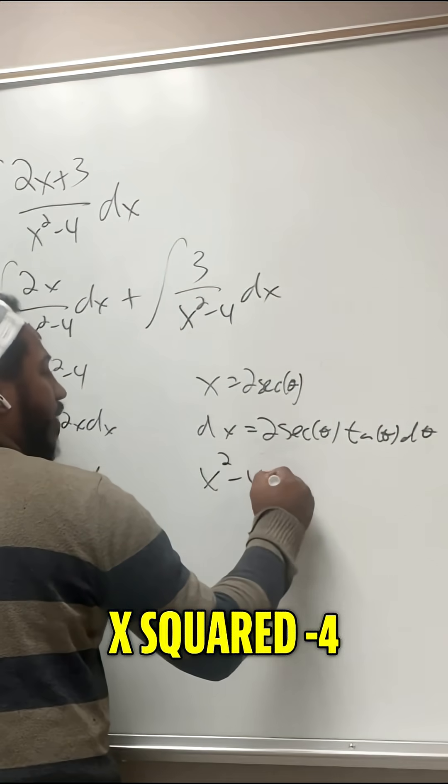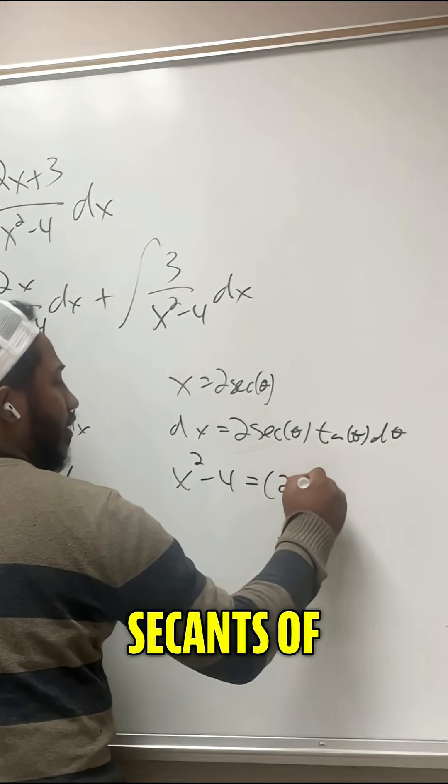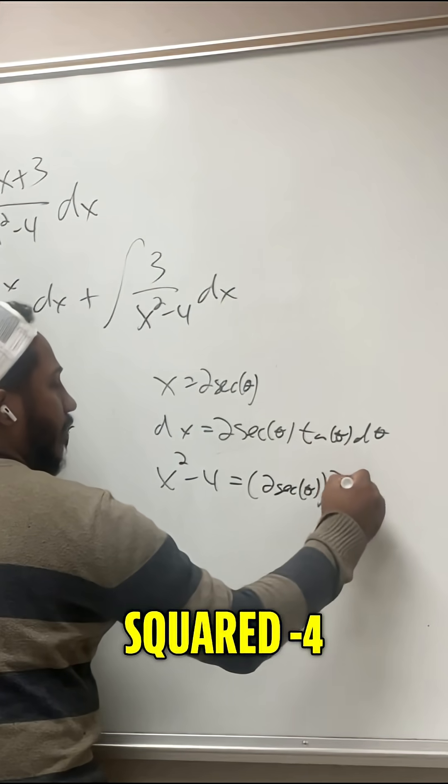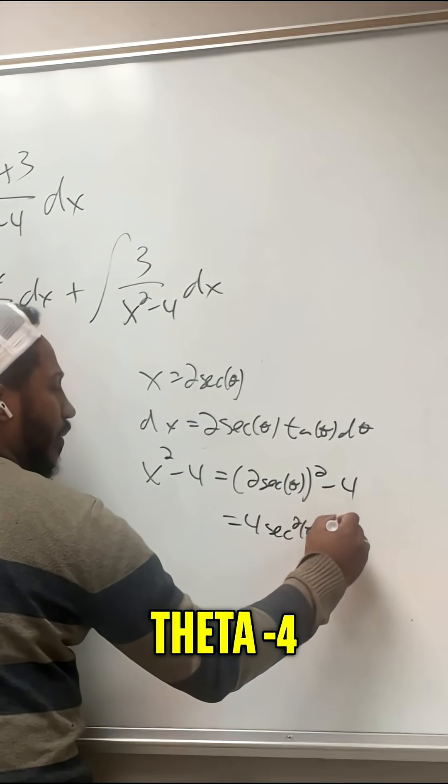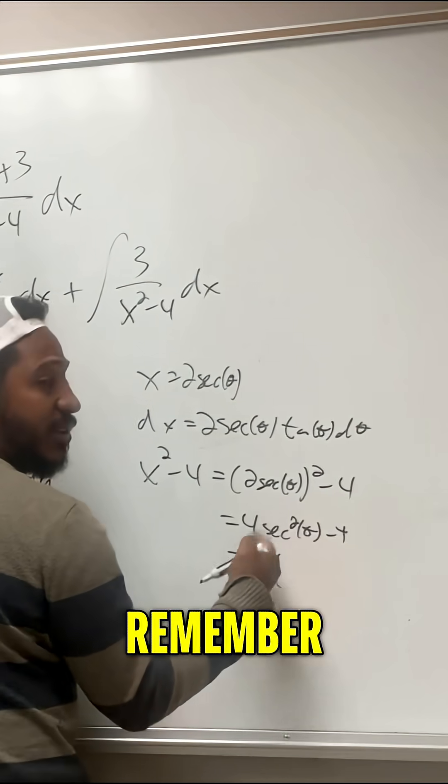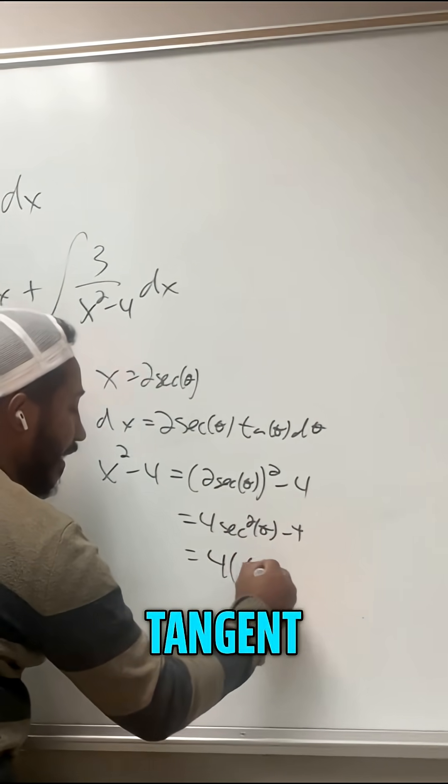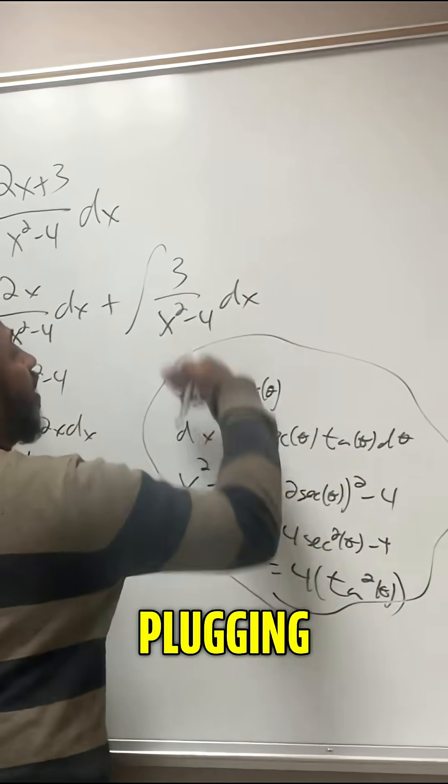Of course, x squared minus 4 then becomes 2 sec of theta squared minus 4. In other words, 4 sec squared of theta minus 4. We get 4 times. Remember, sec squared minus 1 is tangent squared of theta. Plugging those in,